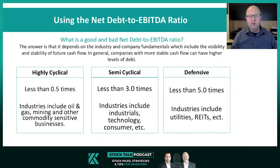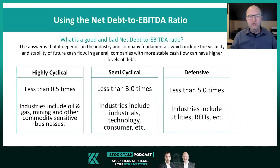In the middle, semi-cyclical companies — a wide range of different types of industries, maybe industrials, technology, consumer companies. Generally we're going to say less than three times. For some of these companies three times is going to be too much; you might want to say more in the one to three times range, but ideally at zero. When investing you want the leverage ratio to be as low as possible. Once you start getting beyond three times net debt to EBITDA in a semi-cyclical business, you're starting to look at what we would consider higher leverage. The higher the ratio, you're starting to get into higher levels of financial risk.